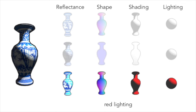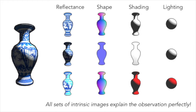Alternatively, you could get the shape right but the lighting wrong, guessing an unnatural red color that shows up in the shading, once again forcing the reflectance to update accordingly. Because these all combine to form the vase input, they are all valid intrinsic images for this observation. That means that finding the correct set of intrinsic images is really about finding the most probable explanation out of infinitely many mathematically valid options.